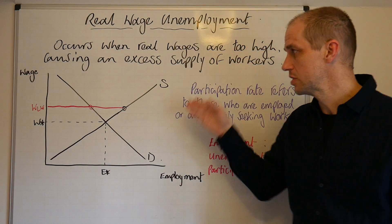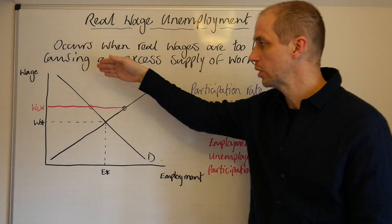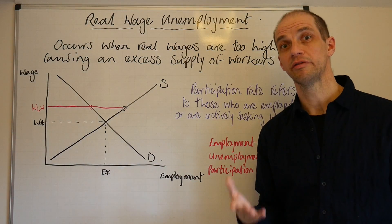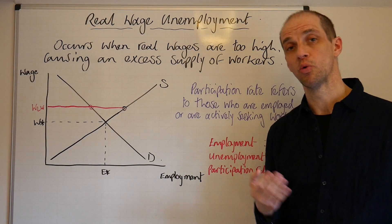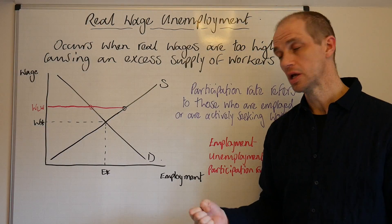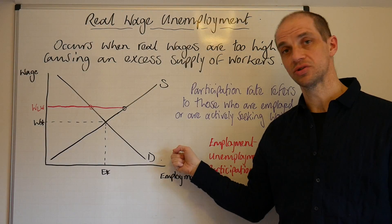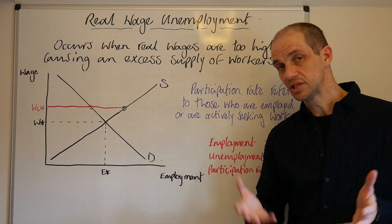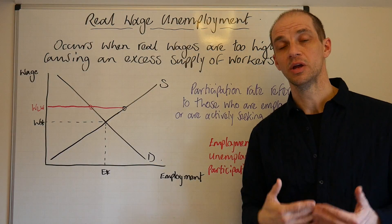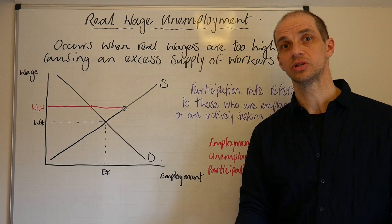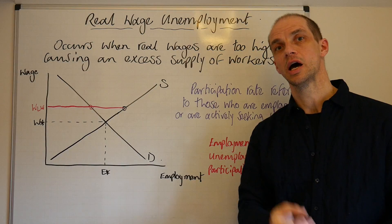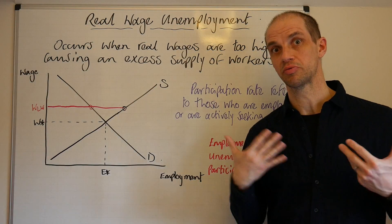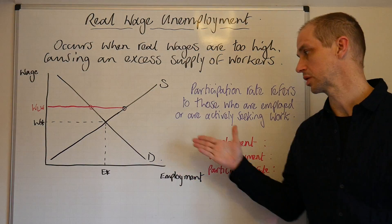Our demand line represents the actual demand of businesses for workers — for employees. This is derived demand, because it is derived from consumers' demand for the actual product, and in turn businesses demand workers to provide that product or service.